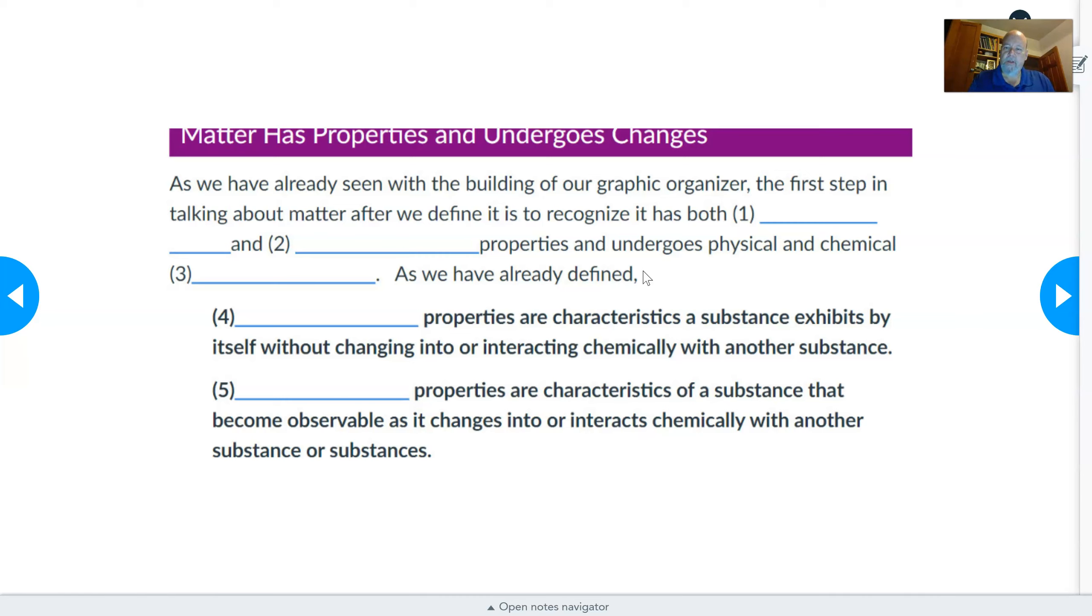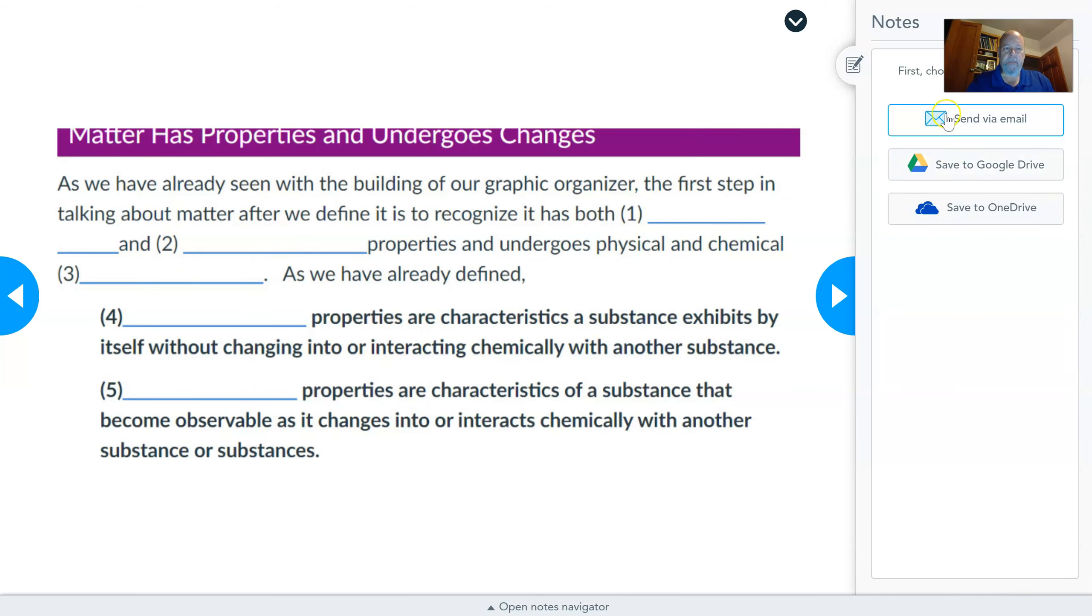we extend our organizational chart to the matter has properties and undergoes changes parts of it. So this forms the core of our organizational chart. We have matter, and matter has properties and undergoes changes. As we've already seen with the building blocks of our graphic organizer, or the building of our graphic organizer, and I'm going to open up the notes thing here so I can type in answers. As we've already seen, the first step in talking about matter after we define it is to recognize that it has both physical and chemical properties.